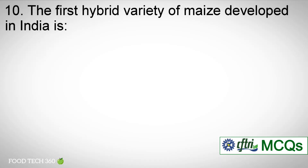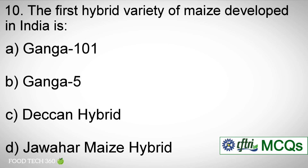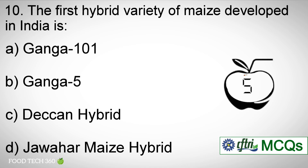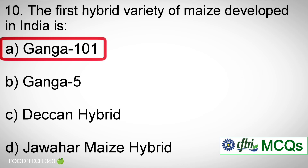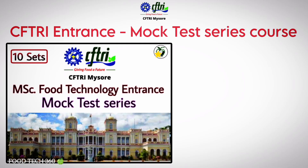Question number ten: The first hybrid variety of maize developed in India — options: a) Ganga 101. b) Ganga 5. c) Deccan Hybrid. d) Jawar Maize. Correct answer: a) Ganga 101.